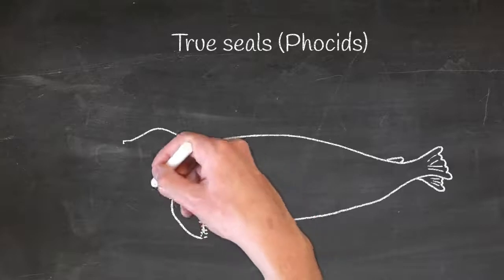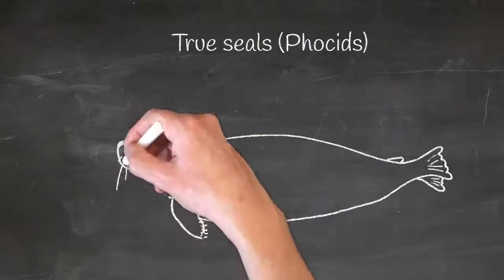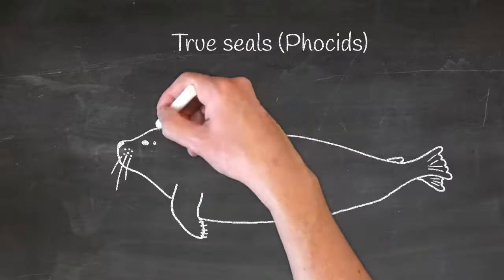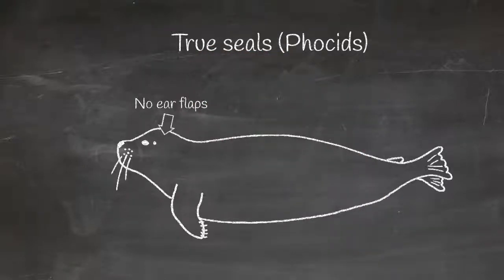There are three physical differences you can use to tell pinnipeds apart. First, true seals do not have outer ear flaps. They have holes in the side of their head just behind their eyes.